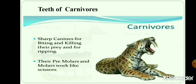Teeth of carnivores. Animals that eat flesh are called carnivores. Animals like lion, tiger, dog and cat have sharp canines that they use for tearing meat. Canines are long and pointed. The molars of carnivores are also sharp and used for slicing. Carnivorous animals swallow their food in whole chunks.